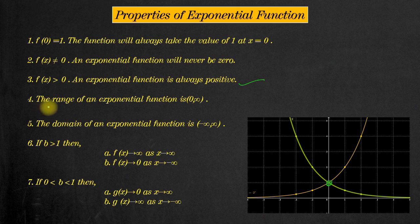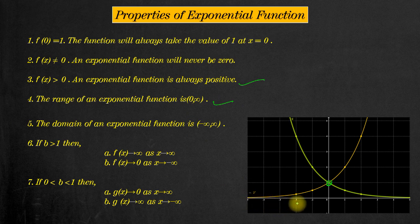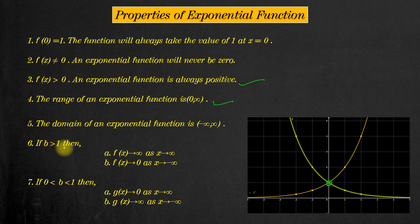Now let's discuss domain and range. The range of the standard exponential function: since the curve never touches the x-axis, its value is always greater than zero and less than infinity. Therefore the range is the open interval (0, ∞). For the domain, x can take any value, so the domain is the open interval (-∞, ∞). Coming to the next property: when b is greater than one...